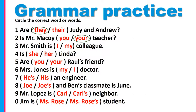Number three: Mr. Smith is I or my colleague. Same as number two – we have colleague, which is a noun, and it refers to possession. Mr. Smith is my colleague. Number four: Is she or is her Linda? We need a subject pronoun. Is she Linda?